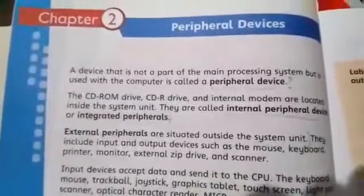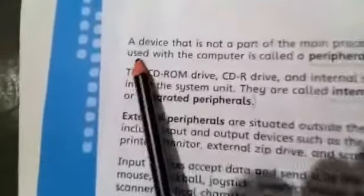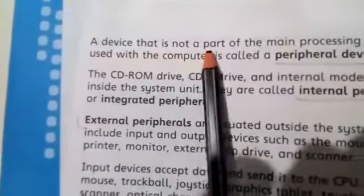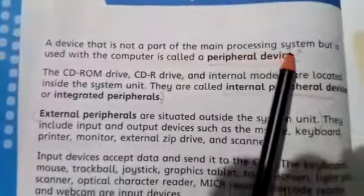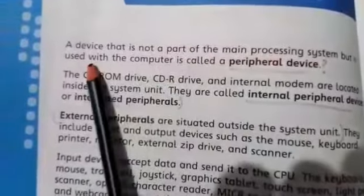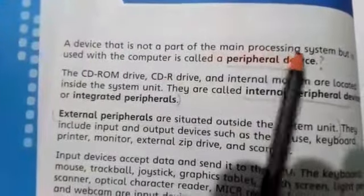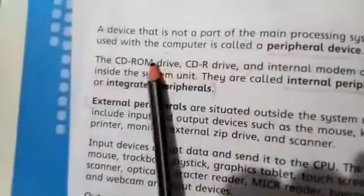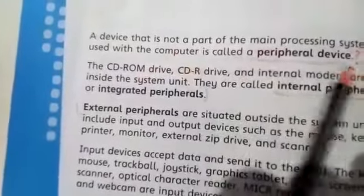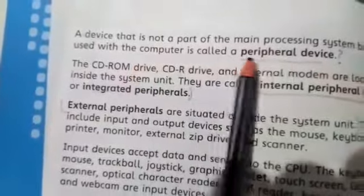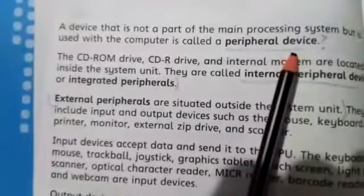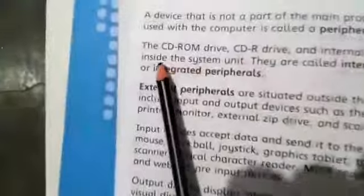What is a peripheral device? A device that is not a part of the main processing system — a device which is not a part of the processing system but is used with the computer — is called a peripheral device.